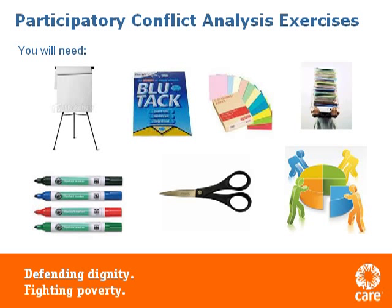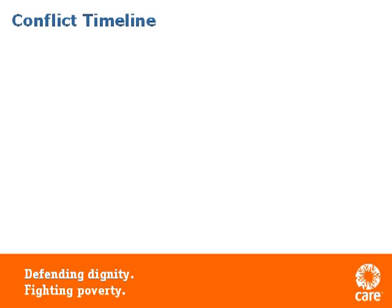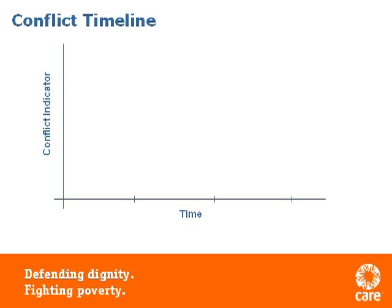So let's look at the first exercise: the conflict timeline. Firstly, in your flipchart, you'll need to draw some axes — one for time and one for levels of conflict. Depending on the context you're in, you'll have to think about what timeframe makes sense for you, whether you want to take the last year or the last 20 years, although you probably don't want to go too far back. In terms of levels of violence, you can either leave this quite vague as a measure of your perceptions of violence over time, or you could choose a specific conflict indicator if you have a sense of or the actual data to hand.